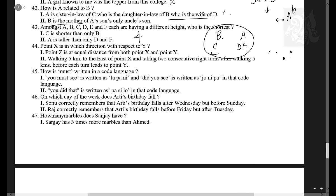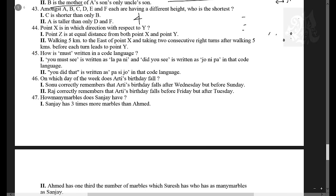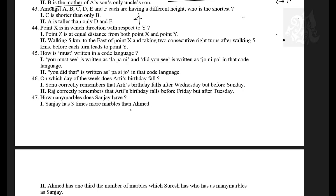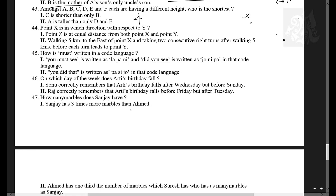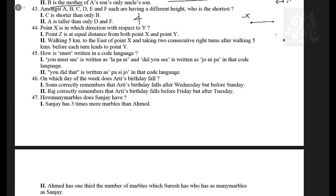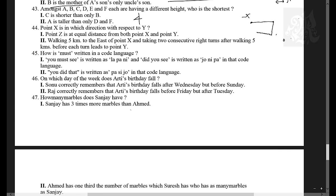Point X is in which direction with respect to point Y? Statement one: a point Z is equidistant from both X and Y — X and Y could be arranged in many ways, so statement one cannot answer. Statement two: starting from X, walking five kilometers east, then two consecutive right turns, leads to Y — so moving five east, then five south, then five west reaches Y, placing Y to the south of X. Answer: statement two alone is sufficient.